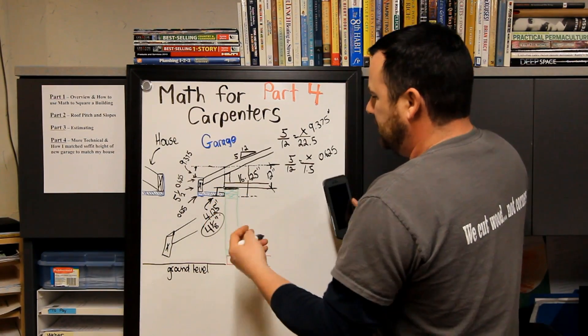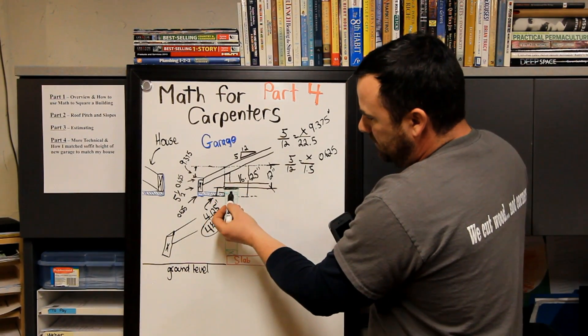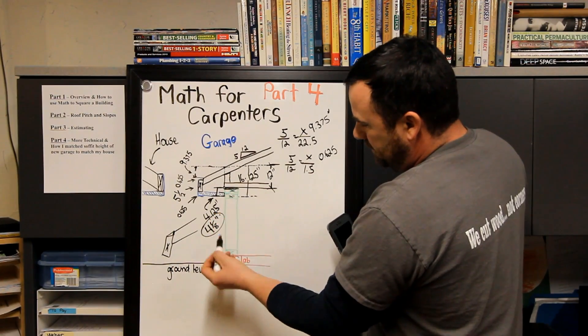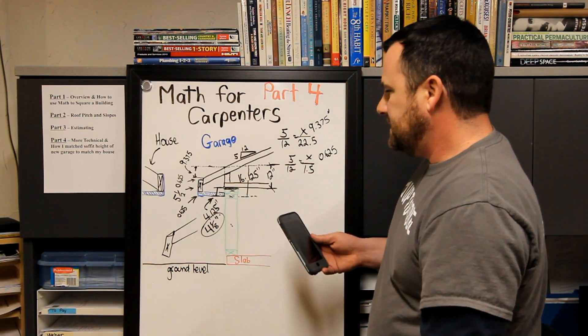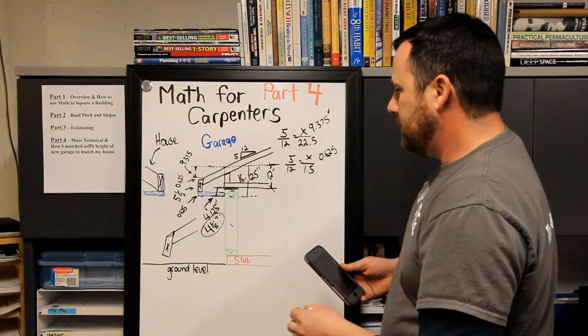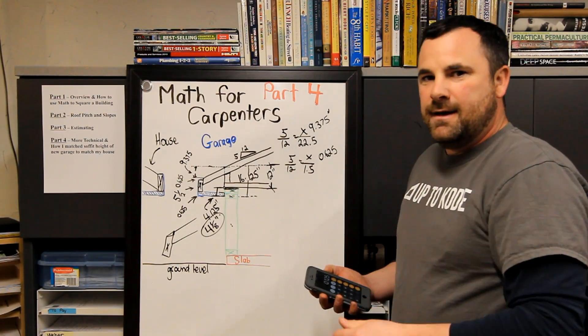Then it just comes into simple framing. I'm using two top plates and a bottom plate, so I minus 4.5, then I know my stud length. But that's where the math can really be advantageous.